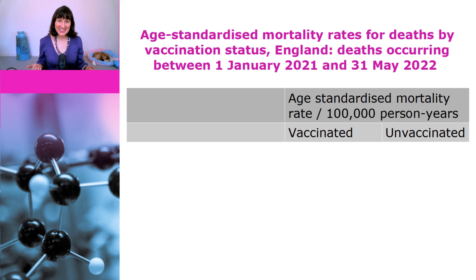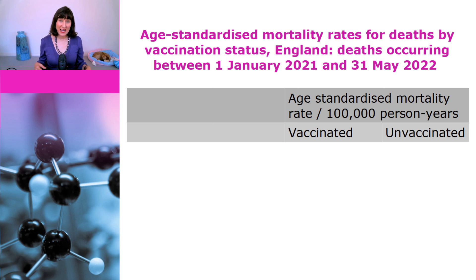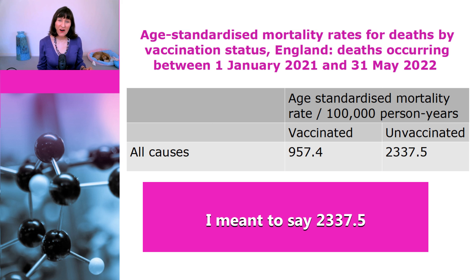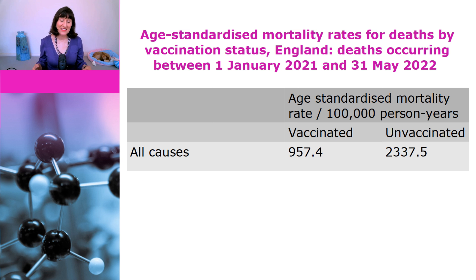This table shows the age-standardised mortality rates for deaths by vaccination status in England. The data includes all deaths occurring between the 1st of January 2021 and the 31st of May 2022, and that's the most up-to-date information at the moment. When they say vaccinated, that is any number of vaccines at any time, so it includes people who have only just had their first dose as well as people who have had three doses. When we look at deaths from all causes, we see the age-standardised mortality rate for vaccinated people is 957.4 per 100,000 person years, compared with 2,307.5 for the unvaccinated. So obviously, the unvaccinated are much more likely to die than the vaccinated.